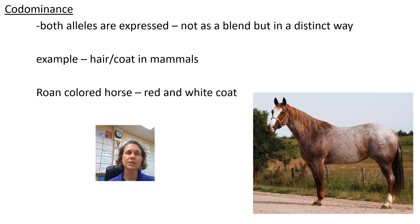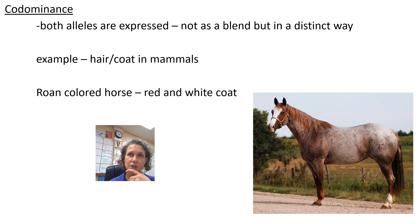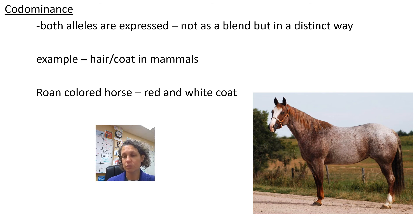Another situation Mendel didn't deal with is co-dominance. In co-dominance, both alleles are expressed, but not as a blend — in a distinct way. You see this often in the coat or hair of mammals. The picture shows a roan-colored horse, which has red and white coats. From a distance they can look pinkish, but if you were up close and pulled some hairs out of its coat, you would have some that were red and some that were white — two distinct colors.